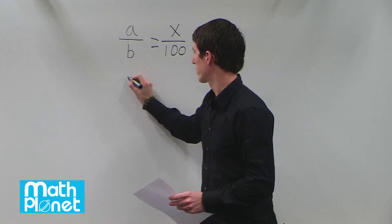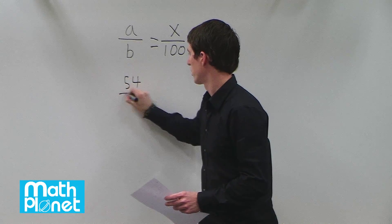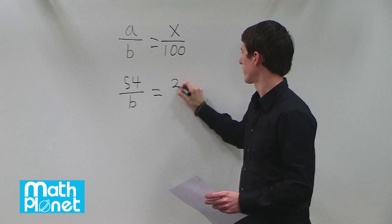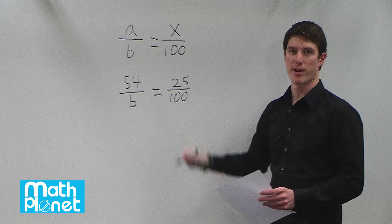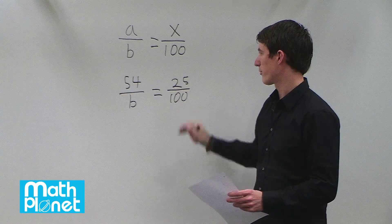So to plug those in, we have 54 over B equals 25 over 100. So this is 25%, and then we can just solve for B.